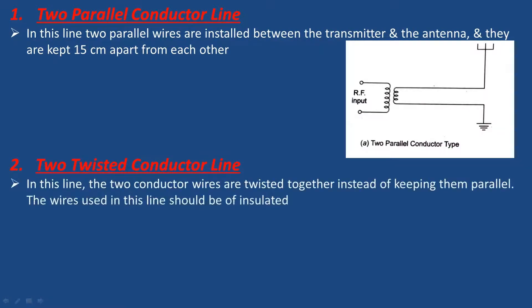Next is the two twisted conductor line. In this line, the two conductor wires are twisted together instead of keeping them parallel. The wires used in this line should be insulated.